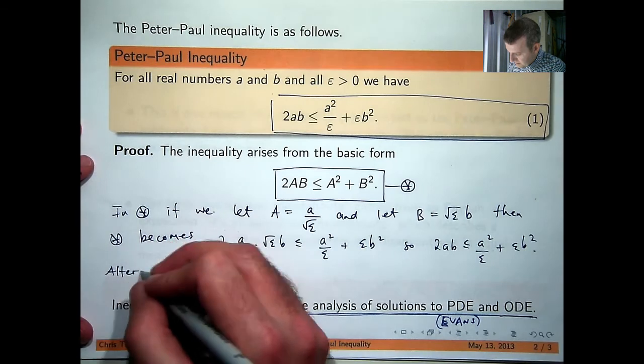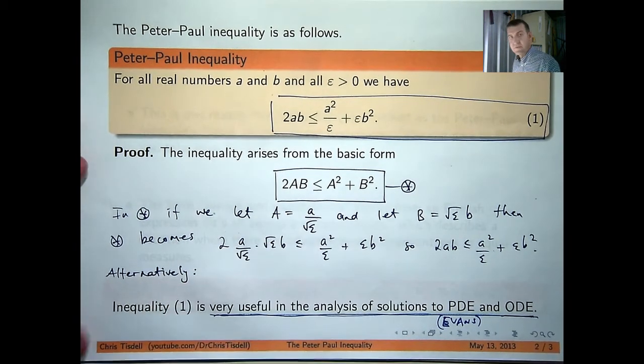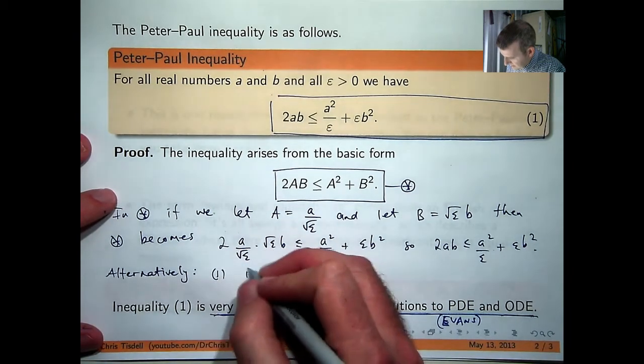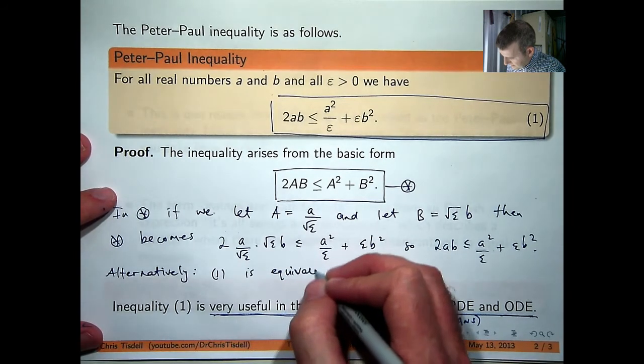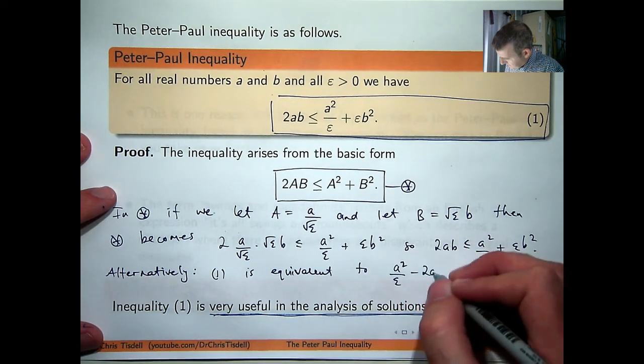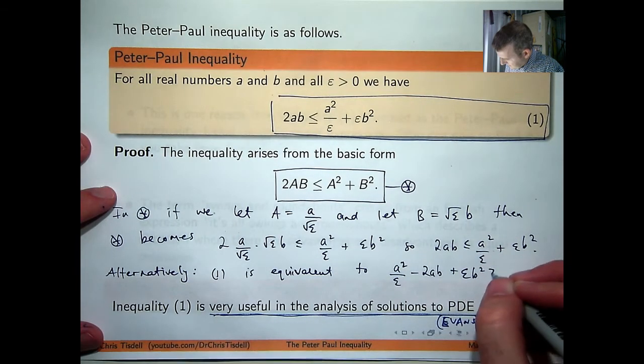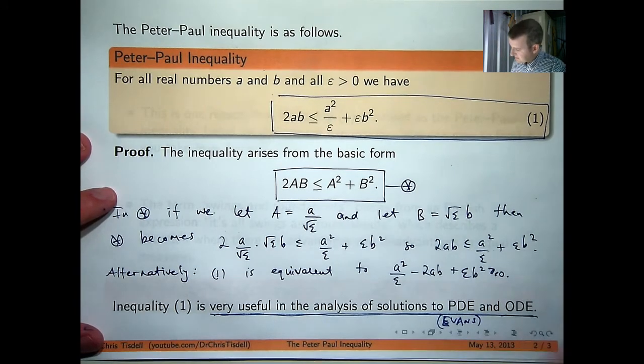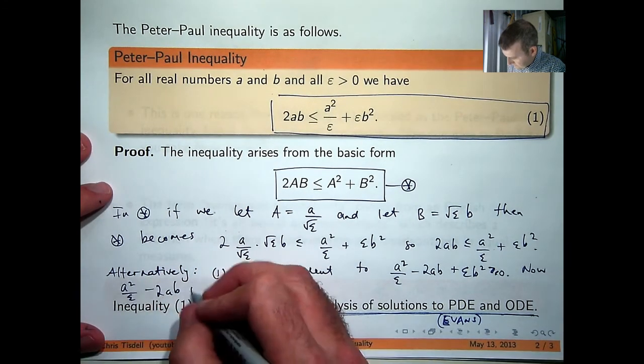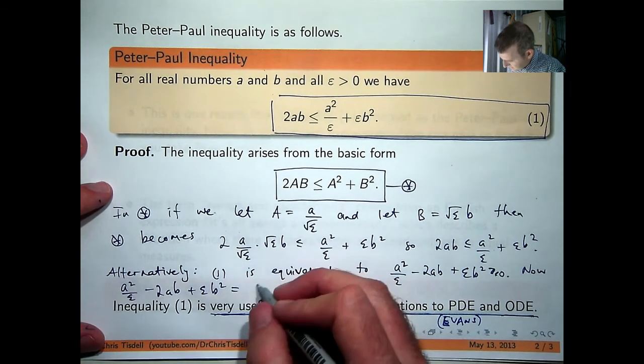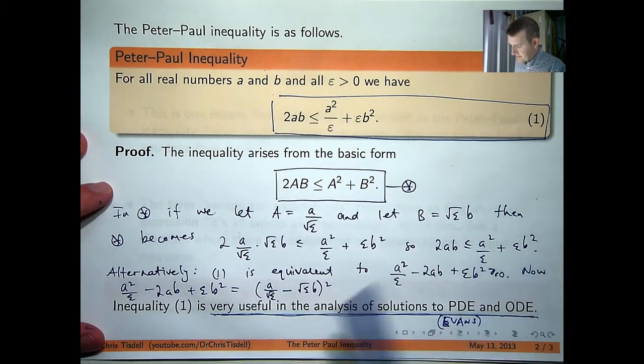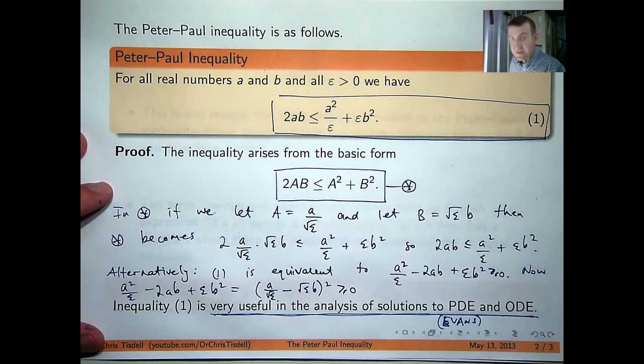Alternatively, you can even do it in an even more direct way without using this. Just take this to the other side, factor, and you'll get it that way. So I can factor this. So this is just the following. Here I've got the square of something, so that is always non-negative.